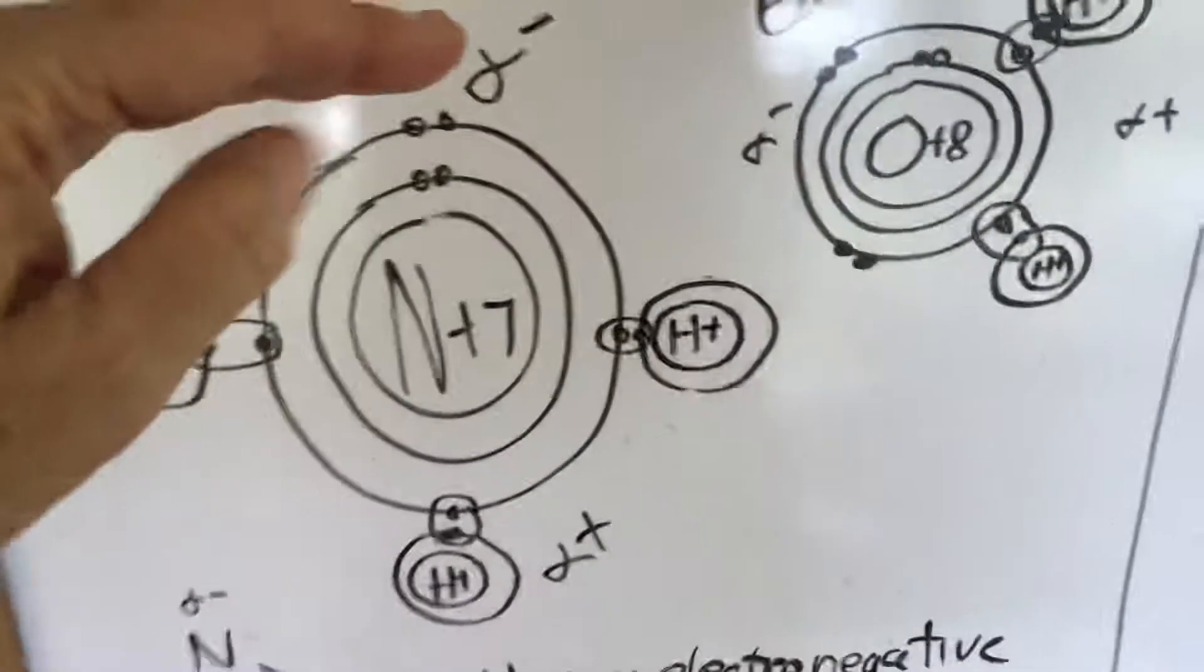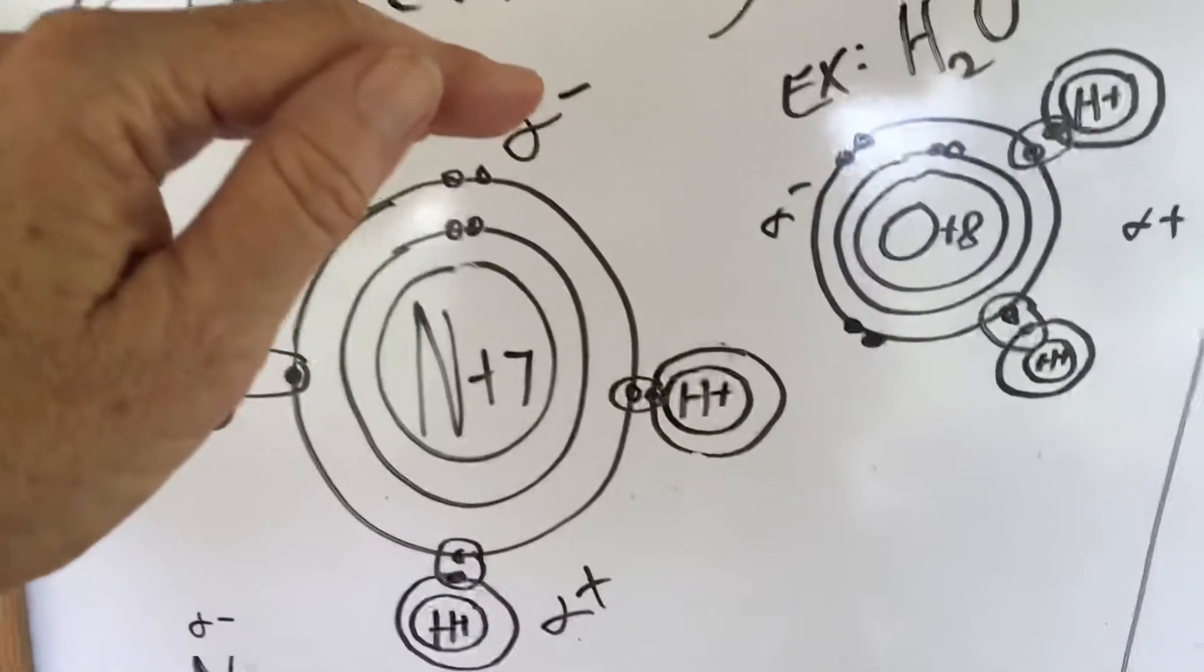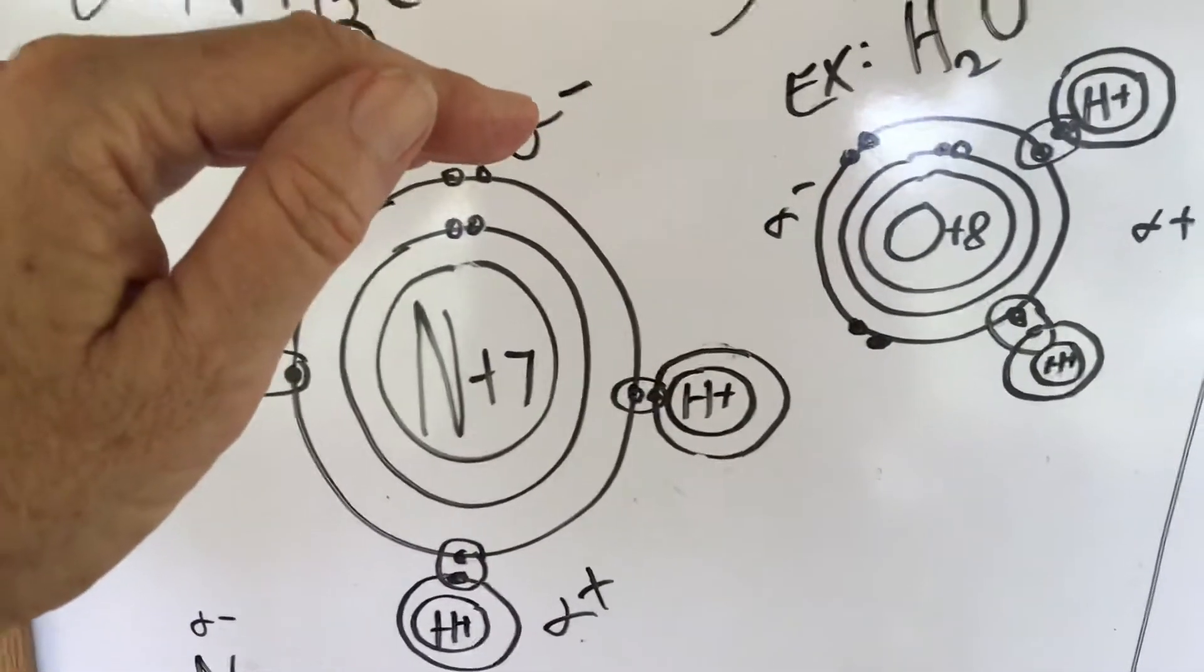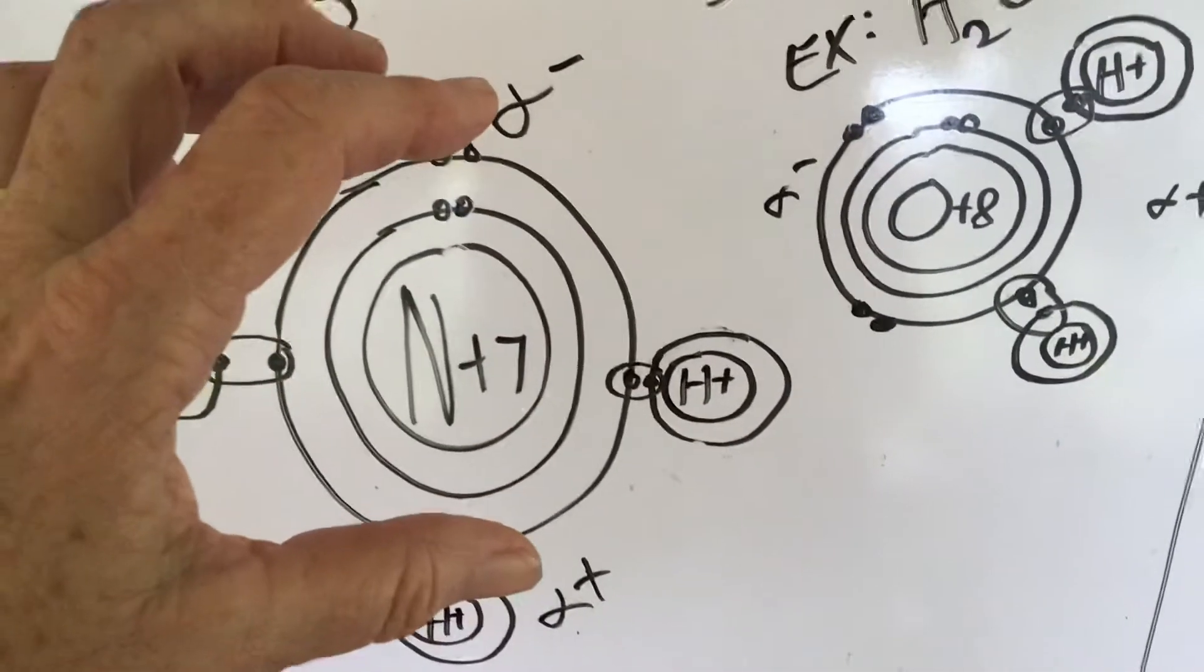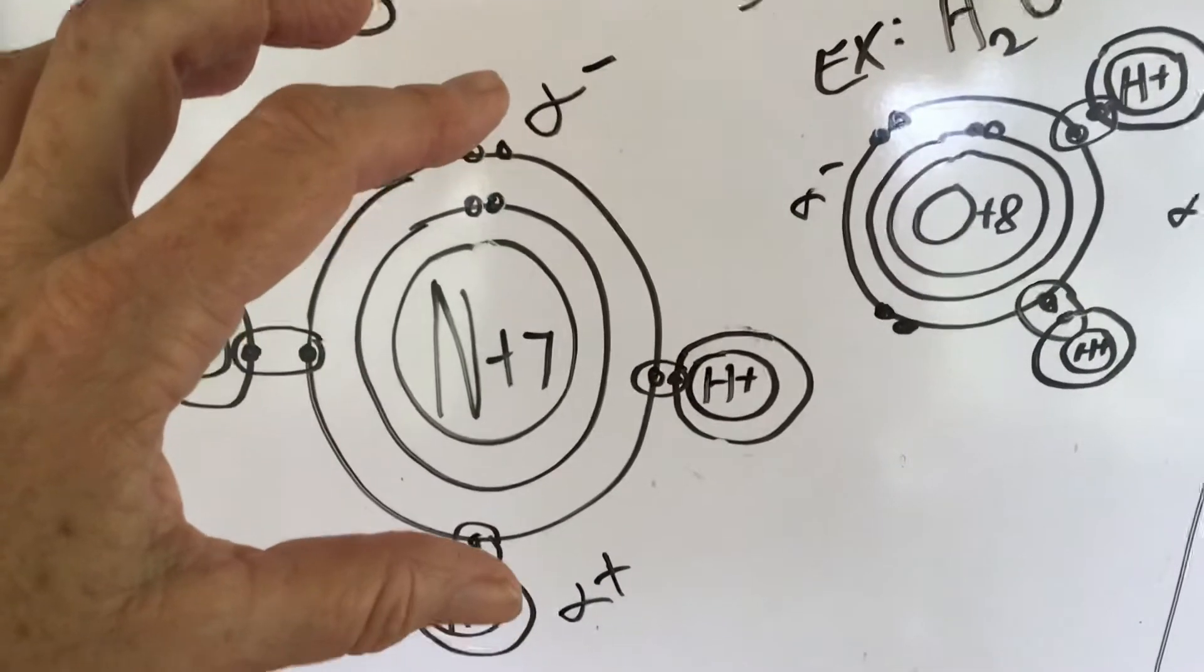So what that means is the electrons are spending more time around the nitrogen paired up in their orbitals. So that gives this side of the molecule a slight negative charge. It's not a full charge, it's not like an ion, but it's enough of a negative charge that it gives the molecule some special properties, which we will talk about in a sec.